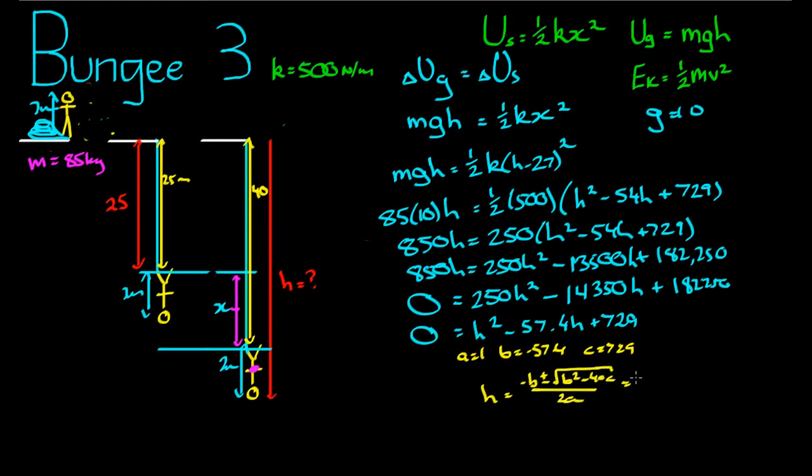Which is equal to negative 57.4, we'll use plus first, the square root of, if we use minus we're definitely going to get a negative number. Plus the square root of 57.4 squared, take away 4, times 1, times 729, all divided by 2.